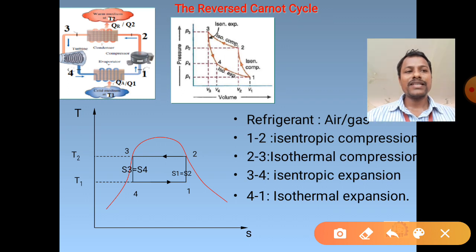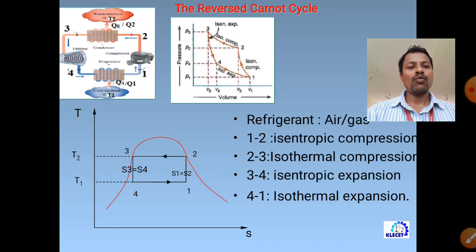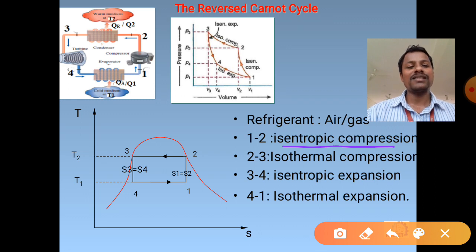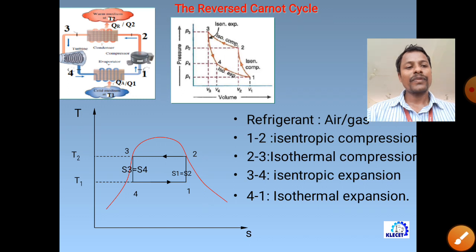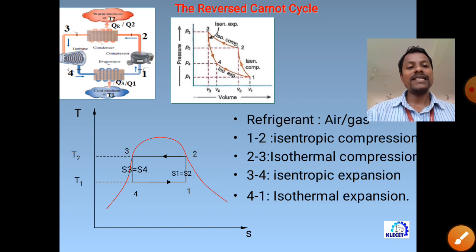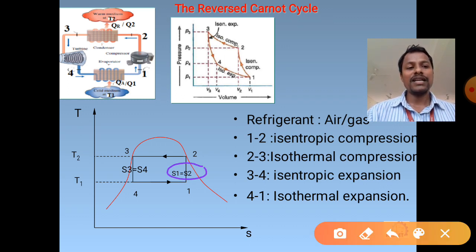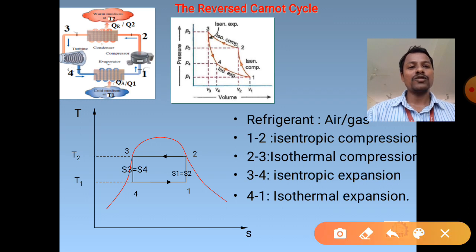At state 4, the air enters the evaporator. Since its temperature is low, it absorbs heat Q_1 (or Q_a) from the refrigerated space, its temperature rises, and it comes out at state 1 - completing one cycle. This cycle executed with these components is called the reversed Carnot cycle, as it is exactly reversed from the Carnot heat engine cycle.